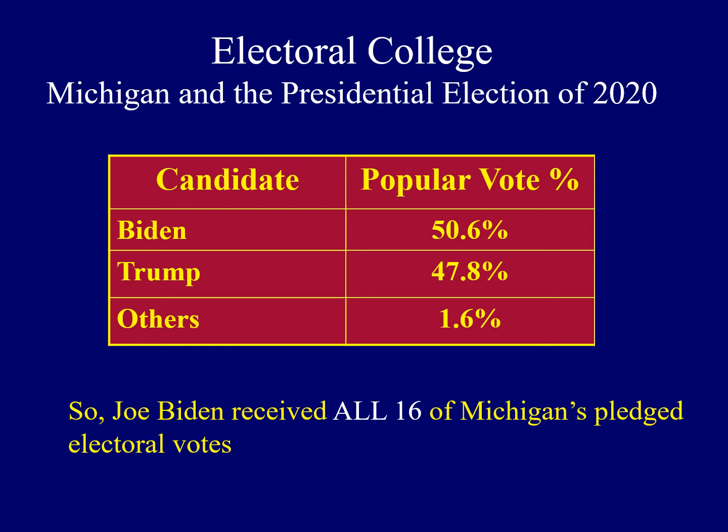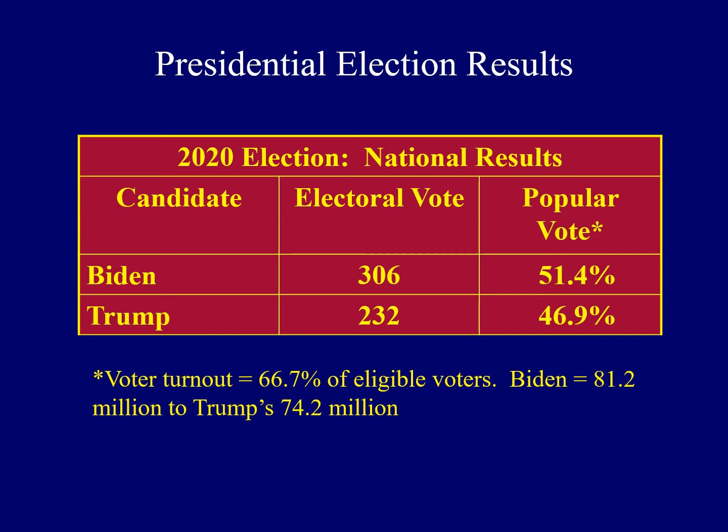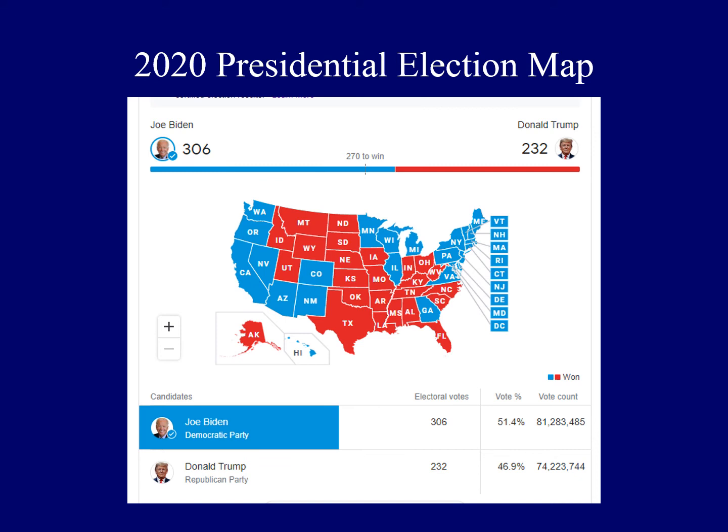In the fall of 2020, Joe Biden took the state of Michigan in a pretty close election, winning with 50.6% of the popular vote. Because Joe Biden won the state of Michigan, he received all 16 of Michigan's electoral votes. Nationally, Joe Biden eventually won 306 electoral votes to President Trump's 232. Voter turnout in 2020 was very high at about 66.7% of eligible voters. The electoral map shows Biden had strong support in the Far West, the Great Lakes, and the Northeast, while Trump had strong support in the American South, the Great Plains, and the Intermountain West.